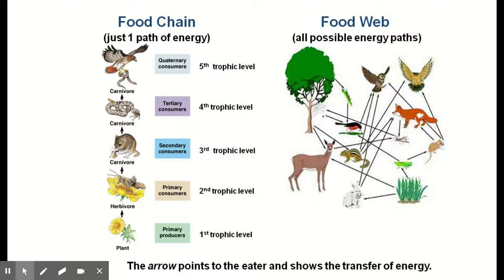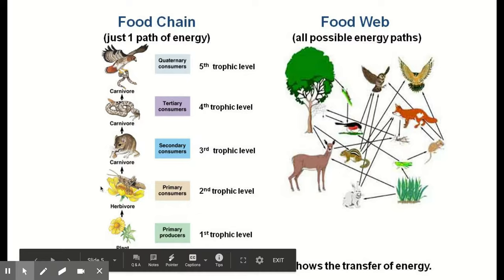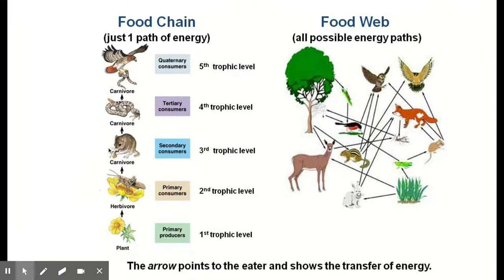Now let's look at some smaller scale interactions — who eats who. When talking about who eats who, we look at either a food chain or a food web. A food chain is one path of energy flow, starting from the bottom with plants that have harnessed solar energy and converted it into chemical energy through photosynthesis, going to herbivores that eat those plants, then carnivores that eat those herbivores. For example: a dandelion eaten by a grasshopper, the grasshopper eaten by a mouse, mouse by a snake, snake by an eagle. That is our food chain.